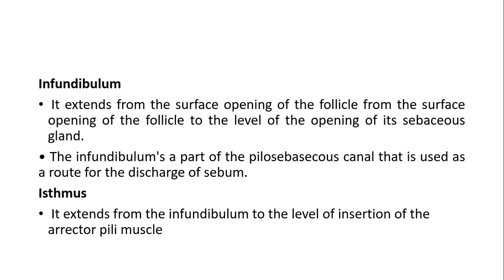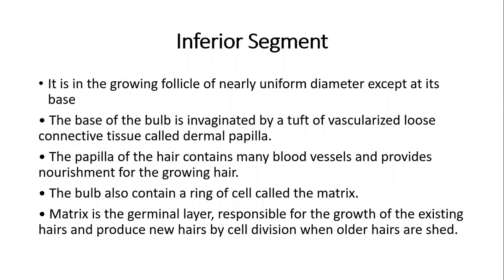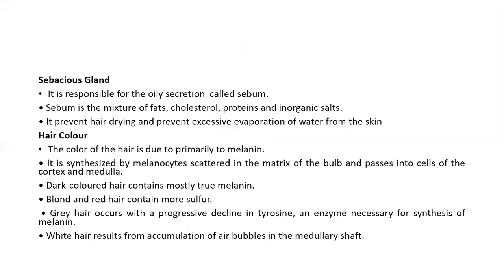The infundibulum is used as a route for the discharge of sebum. The isthmus extends from the infundibulum to the level of insertion of the erector pili muscles. The inferior segment is the growing follicle of nearly uniform diameter except at its base, which is invaginated by a tuft of vascularized loose connective tissue called the dermal papilla. The papilla contains many blood vessels and provides nourishment for the growing hair. The bulb also contains a ring of cells called the matrix — a germinal layer responsible for growth and production of new hairs by cell division, while older hairs are shed.